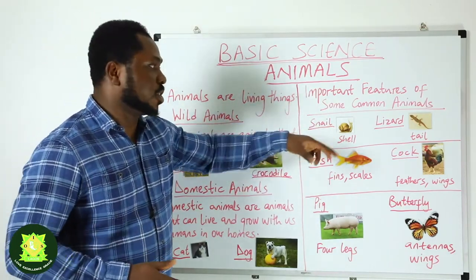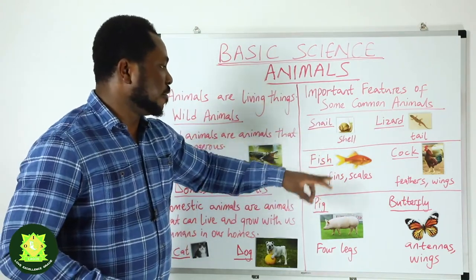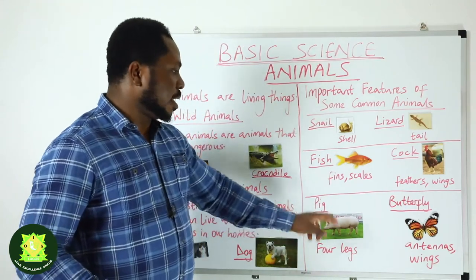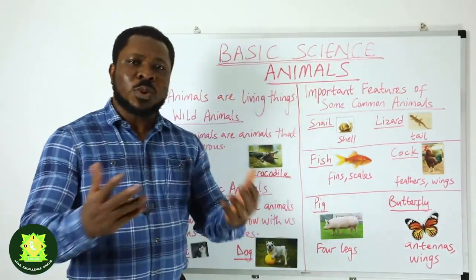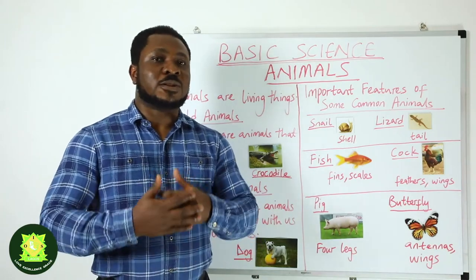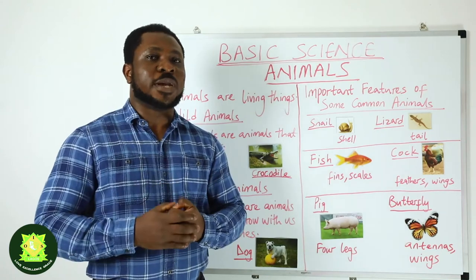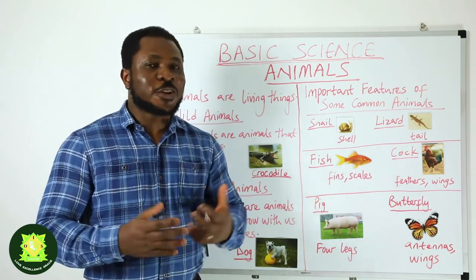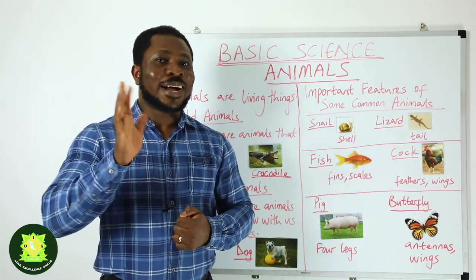We've talked about the snail and its shell, the lizard and its tail, fish with fins and scales, the cock with feathers and wings, the pig with four legs, and the butterfly with antennae and wings. Now I want you to look at your environment, find common animals, and tell your parents what their common features are. Thank you once again for joining us today. Hope you are having a lovely day. Bye bye!